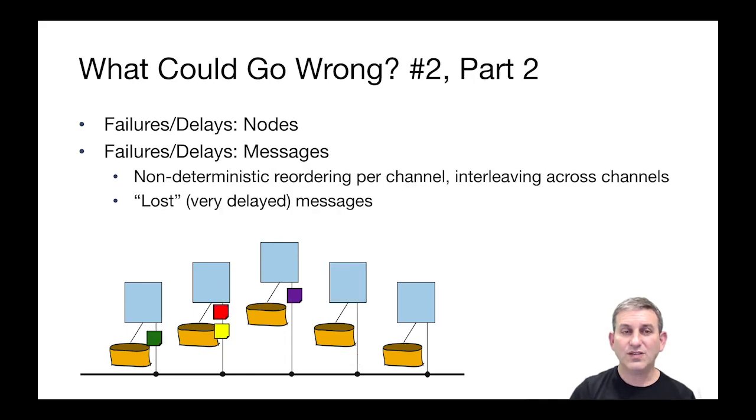So consider also that not only can nodes go awry, but also messages can be unpredictable in this environment due to the channels that are used in distributed systems. Remember that we have non-deterministic reordering of messages on a given channel. Also that as multiple channels send messages to the same node, those messages can get interleaved in different ways. Finally, we can have issues where messages can be lost.